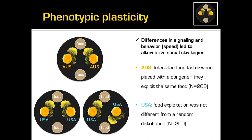We wanted to see how these signaling and behavioral differences affect social foraging. With two food sources and two slime molds, Australian pairs would almost always pick the same food source — a kind of collective decision — and find it quicker than a slime mold alone. In contrast, the U.S. strain showed completely random food distribution with no effect of social interaction. This showed that differences in attractiveness mediated by calcium signaling can be responsible for different social strategies in slime molds.